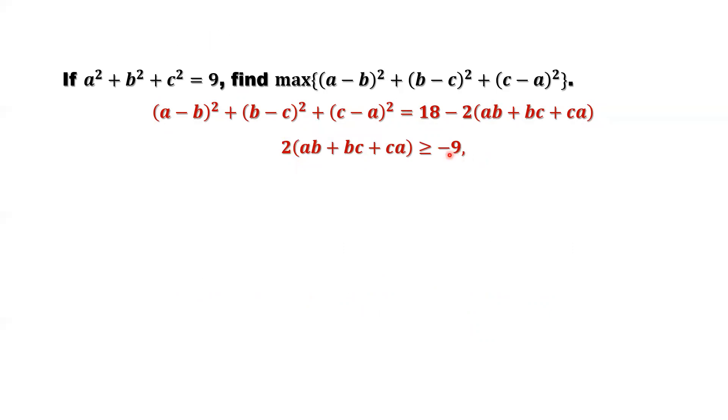So replace this here. This is greater than or equal. If we replace this part by negative 9, the inequality should be changed direction because it has negative. So here, replace this one should be less than or equal to 18 minus negative 9. Minus minus is plus. 9 plus 18 is 27.